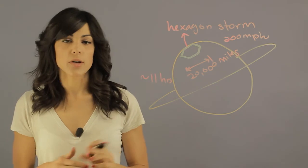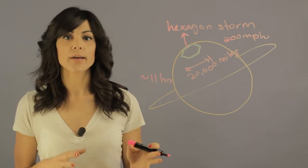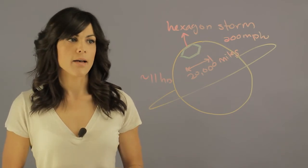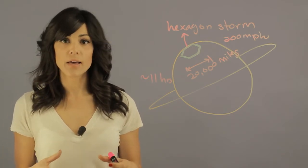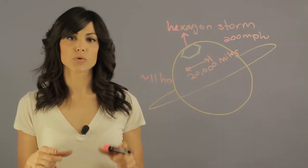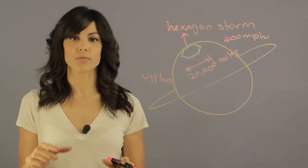What we try to do in order to figure out why we have a hexagonal shape is to try to recreate this in the lab here on Earth. And it turns out that you can recreate the same shape if you have two different types of bodies traveling at different speeds.